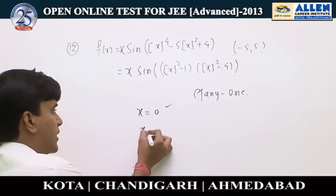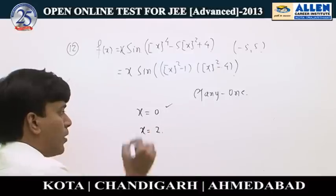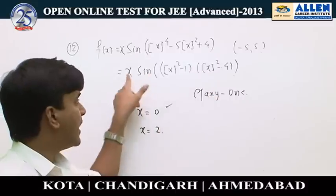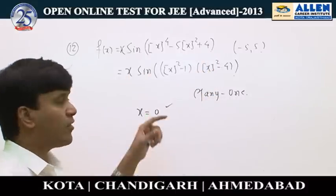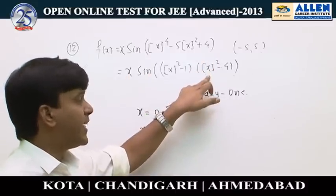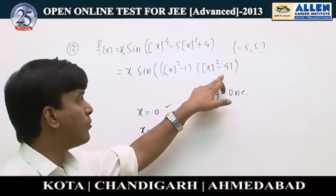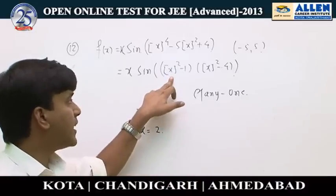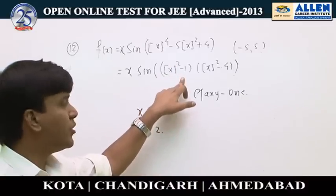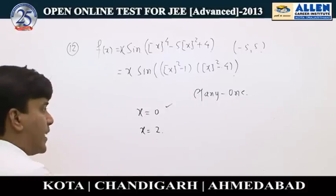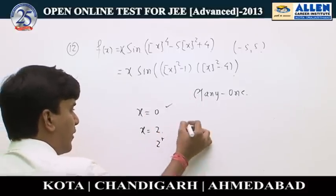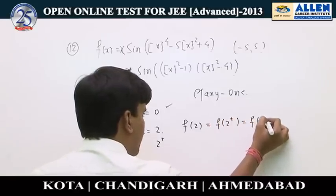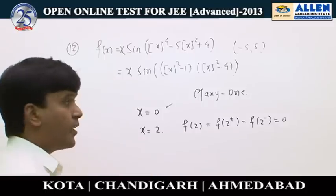At x equals 2, f(2) equals 0. From the right (2+), [x] equals 2, so [x]² minus 4 equals 0, giving f equals 0. From the left (2−), [x] equals 1, so [x]² minus 1 equals 0, giving f equals 0. All three values agree, so the function is continuous at x equals 2.